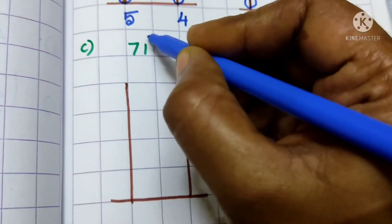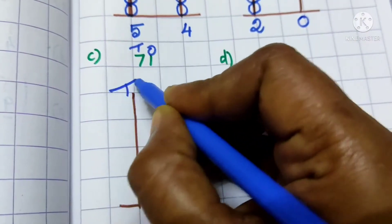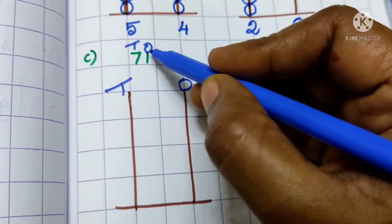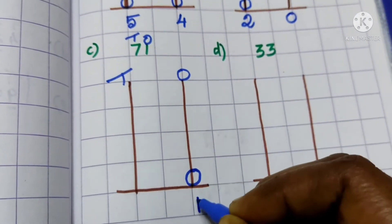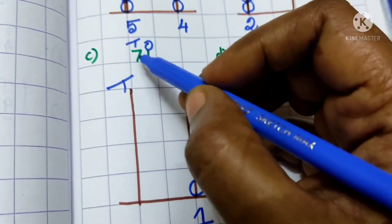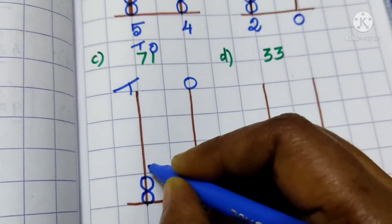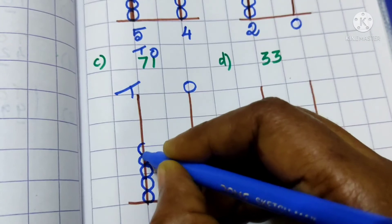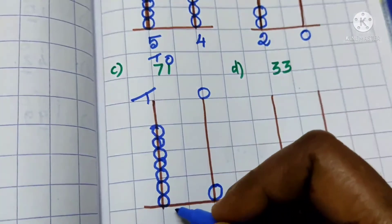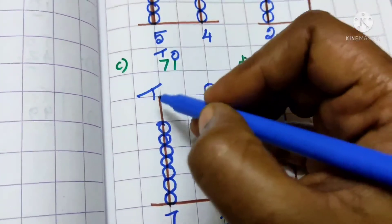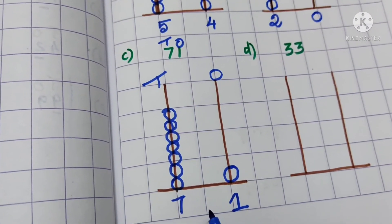3rd one: 71. Put the place value — 1's and 10's. How many beads do we draw for 1's? Just only 1. Take and write 1. And how many 10's are there? 7. So we draw 1, 2, 3, 4, 5, 6, 7 — 7 beads on the 10's place value. 7 tens and 1 one — the number is 71.